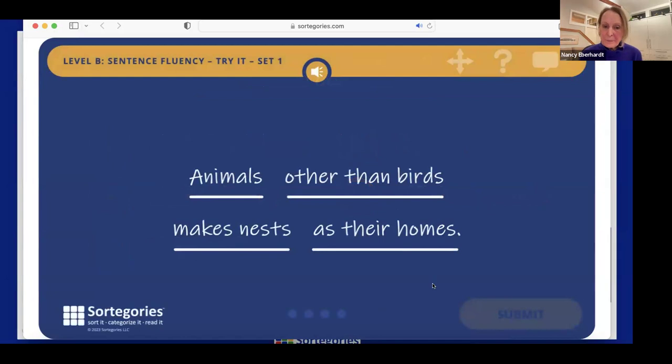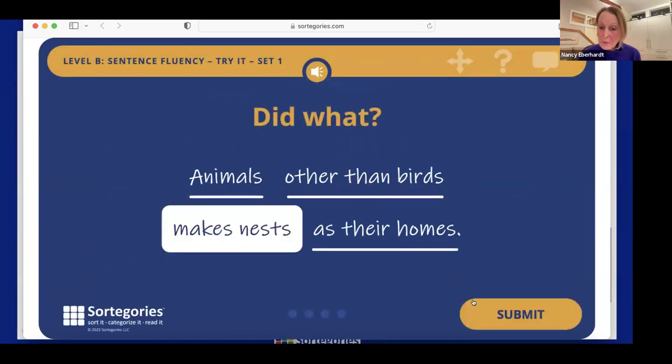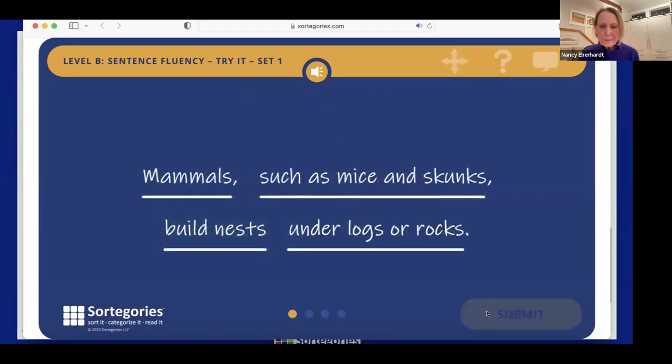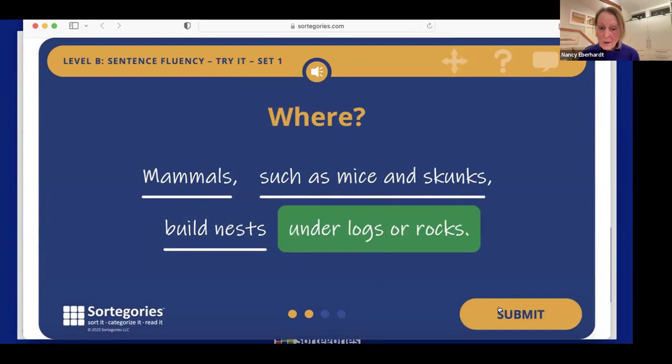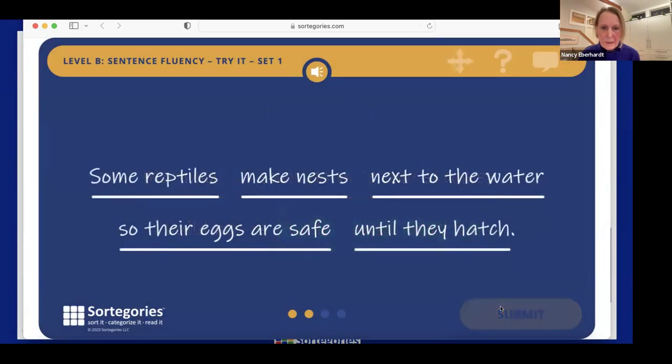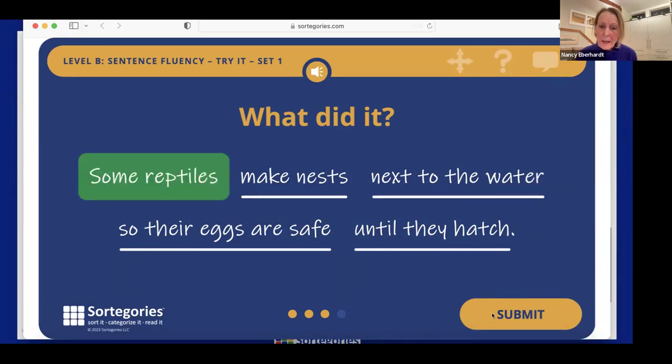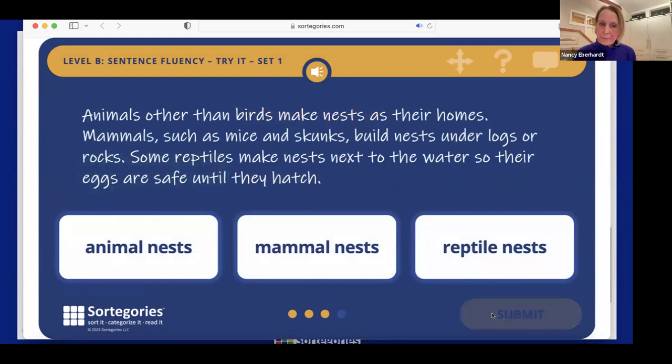And one of the things that we are learning through our talk with teachers is part of the reason they don't feel comfortable working on some of these skills is they don't have the language to teach it and talk about it. So what we're trying to do is break this down and make that possible. What word or phrase answers 'did what?' And the answer would be 'makes nests.' What word or phrase answers 'where?' And if I read each phrase, I'd come up with 'kind of a log.'